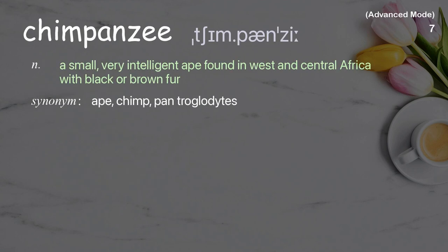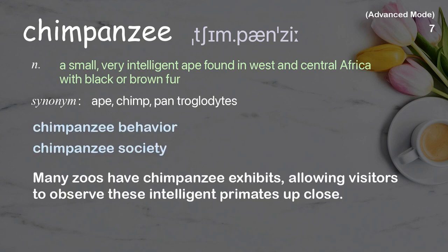Chimpanzee: a small, very intelligent ape found in West and Central Africa with black or brown fur. Examples: chimpanzee behavior; chimpanzee society. Example sentence: Many zoos have chimpanzee exhibits, allowing visitors to observe these intelligent primates up close.